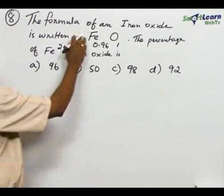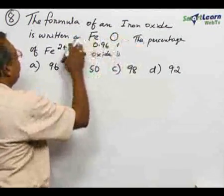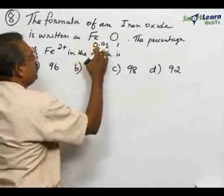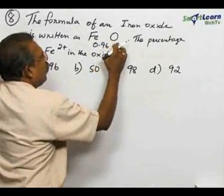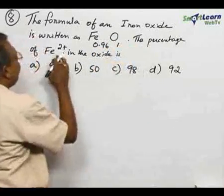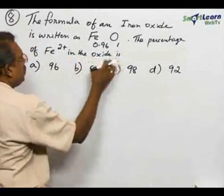Number 8, the formula of an iron oxide is written as Fe 0.96 O 1. The percentage of Fe 2+ in the oxide is: